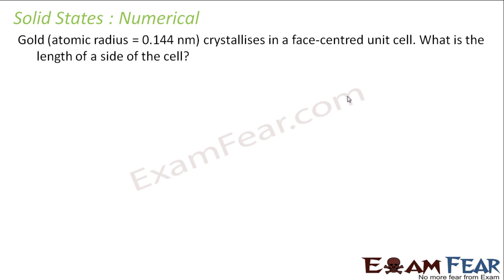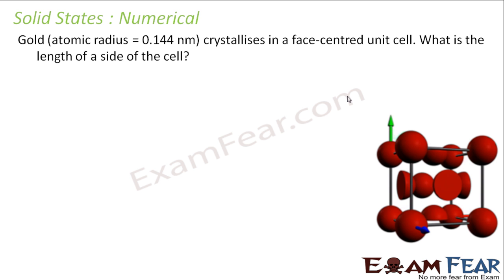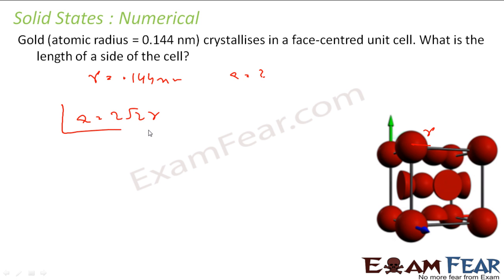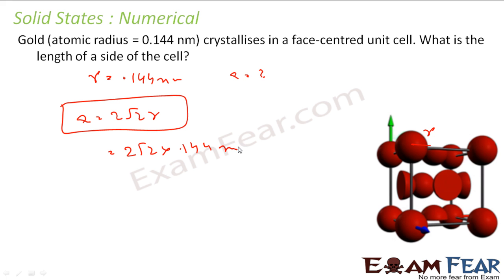Gold crystallizes with an atomic radius given, and it lies in the face-centered cubic structure. We need to find the length of the side wall. Given r = 0.144 nm, we use the relation a = 2√2·r. Substituting the values, the edge length a = 2√2 × 0.144 nm = 0.407 nm.